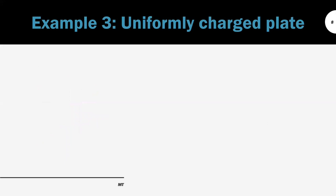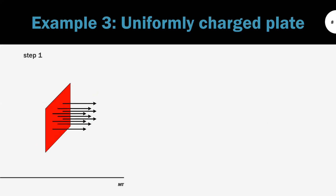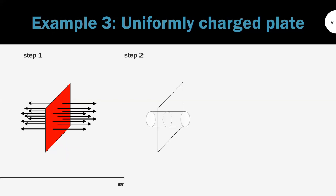The third example is the uniformly charged plane. We have a charged plane where the electric field flows in two directions: to the right and to the left, perpendicular to the surface. To choose the Gaussian surface, we pick the cylinder, since the highlighted area A is penetrated by the electric field lines perpendicularly, and there is zero electric field line penetrating through the curved surface of the cylinder.